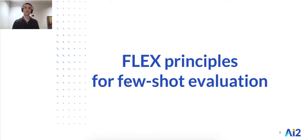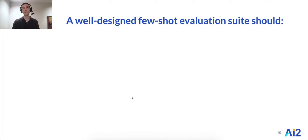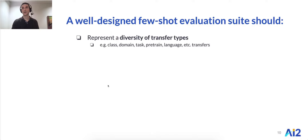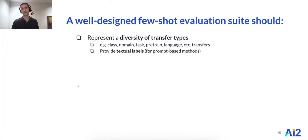A well-designed few-shot evaluation suite should first represent a diversity of transfer types — including class, domain, task, and pre-training transfer types — and also for NLP, transfer to new types of languages. Towards this end, it should provide textual class labels to test generalizing based on concepts, which is crucial for recent prompt-based NLP methods that are text-based.